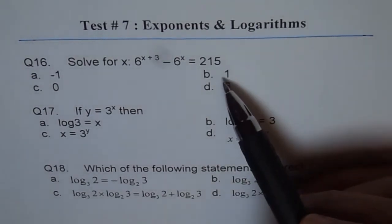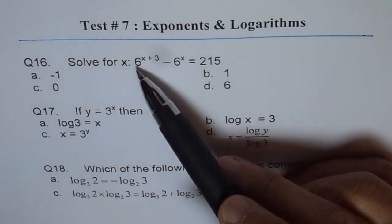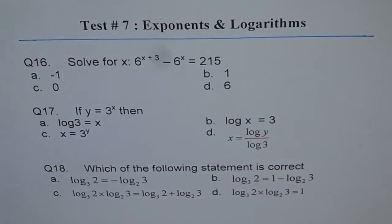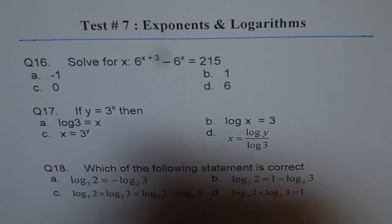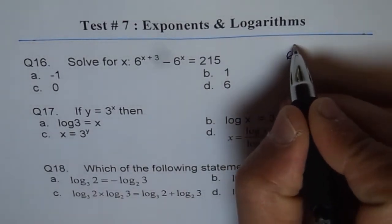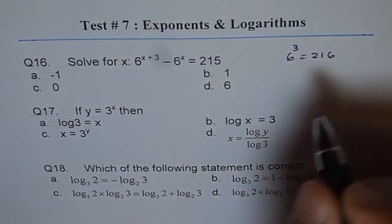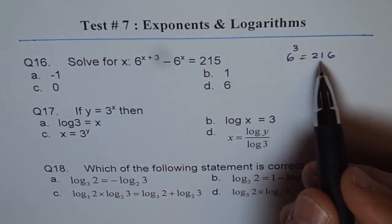If I plug in x equals 1, for example: 6 to the power of 1 plus 3 is 6 to the power of 4 — wait, let's check x equals 1: 6 to the power of 3 is 6 times 6 times 6, which equals 216. But we need 215, so 6 to the power of 3 is 1 more than needed.